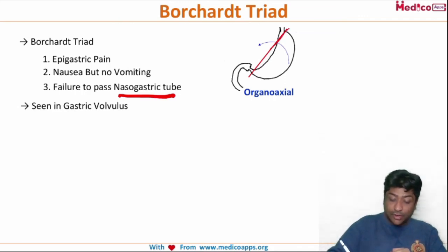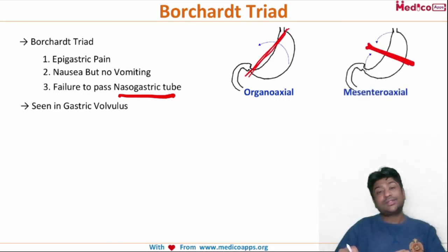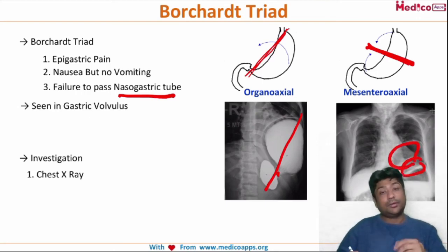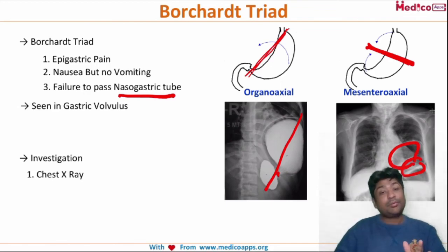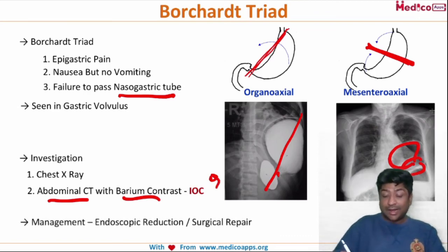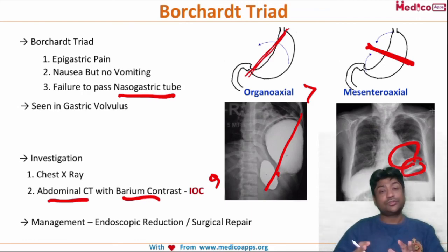There are two types of gastric volvulus. One is organoaxial — volvulus around the long axis of the stomach. The second is mesenteroaxial — volvulus around the transverse axis. On chest X-ray you can see the folding happening around the respective axis. The investigation of choice is abdominal CT, probably with barium contrast. Management is either endoscopic reduction or surgical repair. Organoaxial is more common than mesenteroaxial. These were the important disorders of the esophagus — very short topics, but one or two questions generally come from this topic.